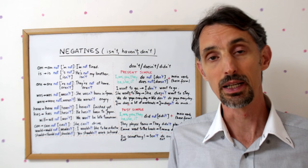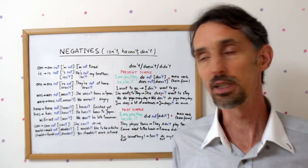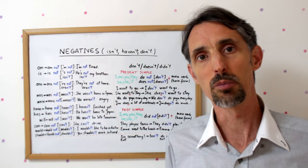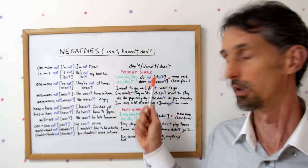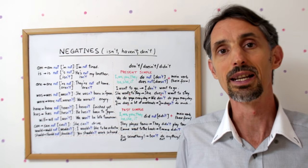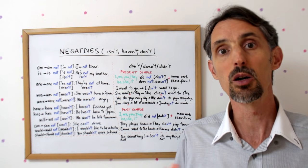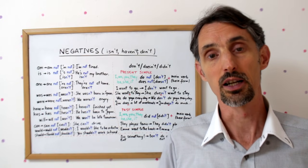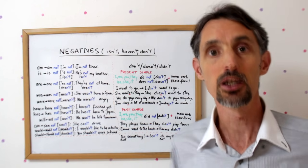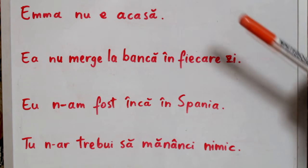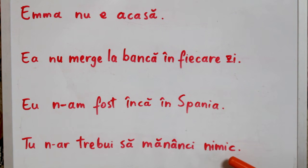Vom prezenta astfel de forme negative pentru diferite timpuri verbale. De aici un bun prilej de a ne mai reaminti câteva cunoștințe legate de timpurile verbale și de asemenea vom prezenta și câteva excepții, câteva cazuri mai speciale, acestea referindu-se la timpurile verbale present simple și past simple unde la formele negative particula NOT nu se adaugă pur și simplu verbului principal ci este nevoie de un verb auxiliar. Este vorba de verbul DO care primește această particulă NOT. La final, dumneavoastră veți putea exprima în engleză enunțurile Emma nu e acasă. Ea nu merge la bancă în fiecare zi. Eu nu am fost încă în Spania. Tu n-ar trebui să mănânci nimic.